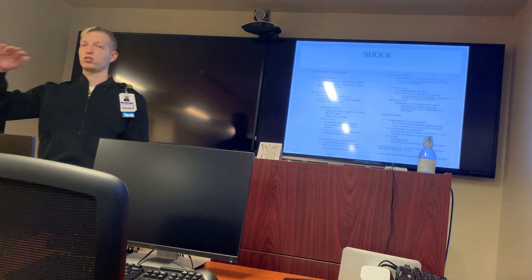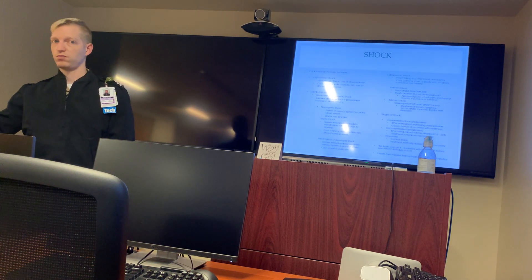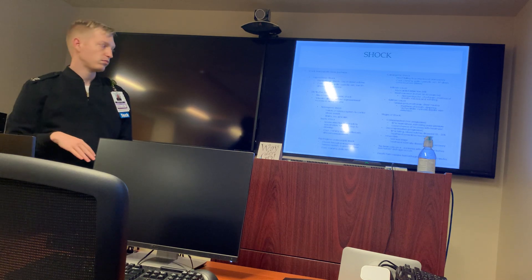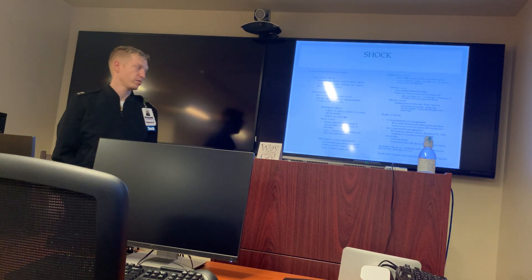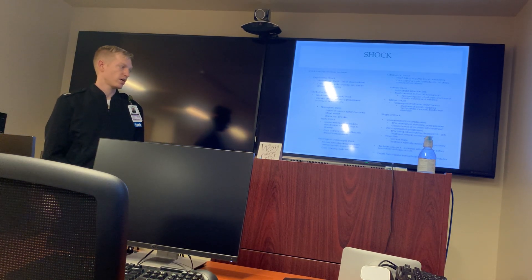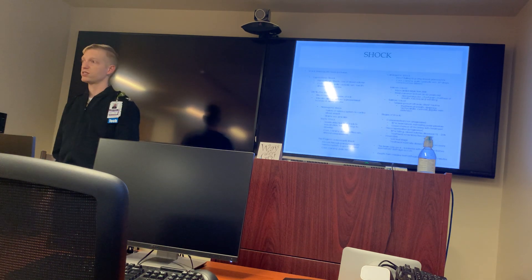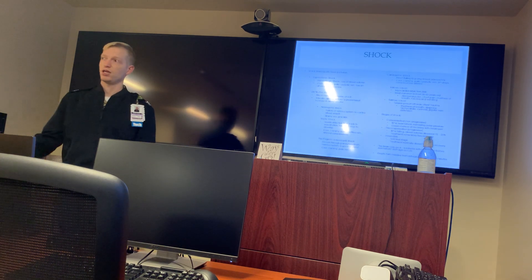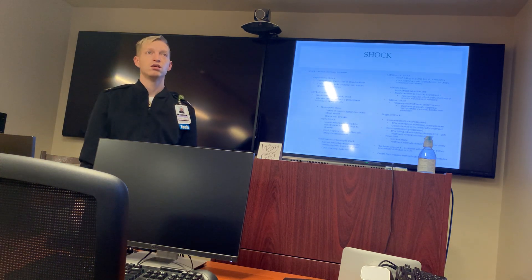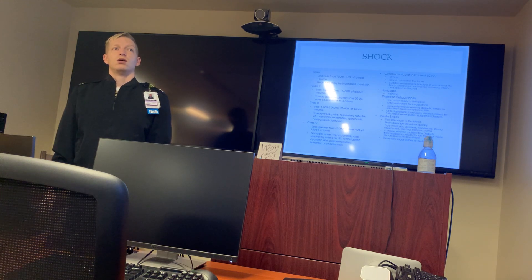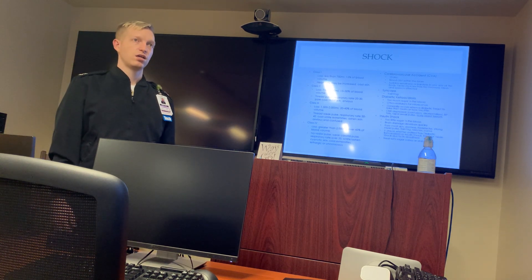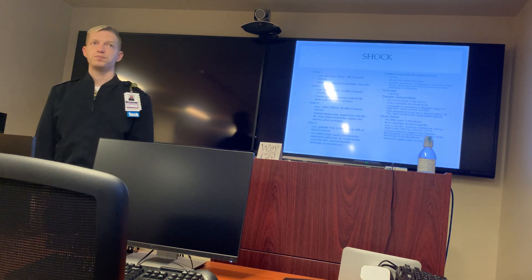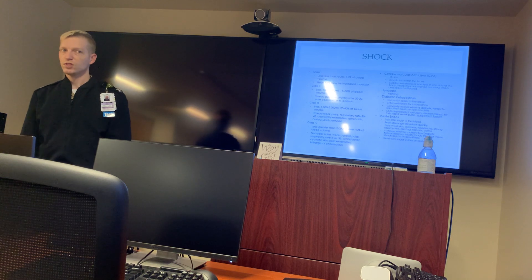The brain can go four to six minutes without oxygen before permanent damage occurs. For massive hemorrhage, death can occur in two minutes. That's why we stop the bleeding first, then address the airway. There are also multiple classes of hemorrhage — Class 1 through 4.